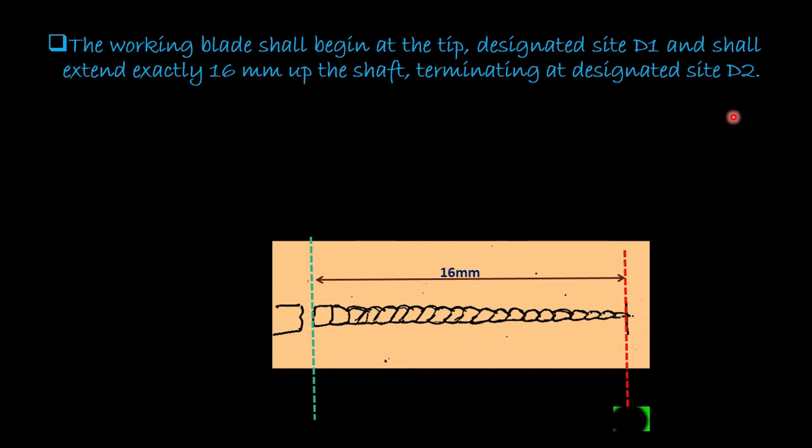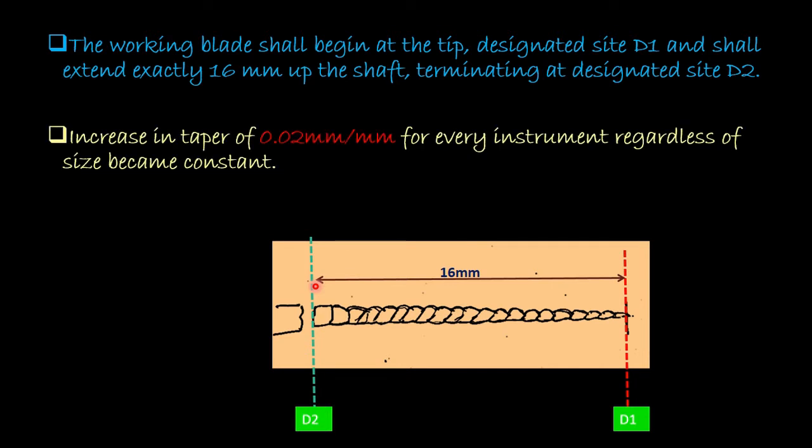The working blade begins at D1, and 16 mm from the D1 up to the shaft we have D2. An increase in taper of 0.02 mm per mm for every instrument regardless of the size became constant. The 2% taper was kept constant regardless of the size of the instrument.